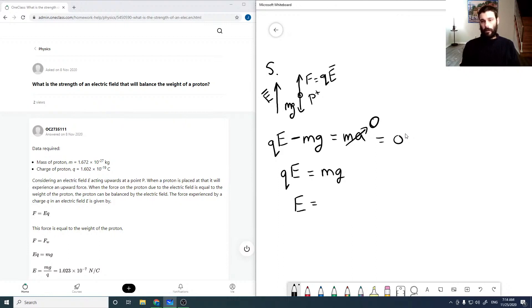Now using the mass of a proton as 1.672 times 10 to the minus 27 kilograms, the charge on a proton is just a positive electric charge, so 1.602 times 10 to the minus 19 coulombs.